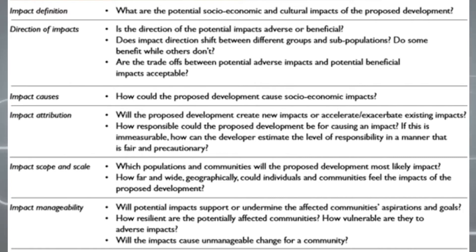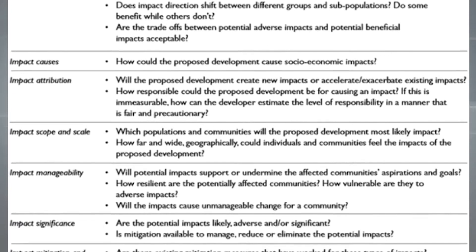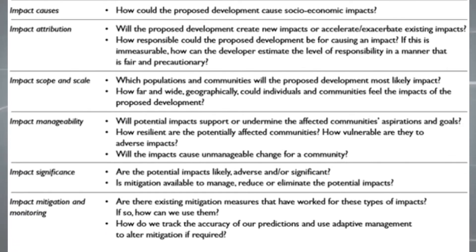Impact scope and scale — which populations and communities will most likely be impacted, and how far and wide geographically could individuals and communities feel the impacts? Impact manageability — will the impacts support or undermine the affected communities' aspirations and goals? Will the impacts cause unmanageable change for a community? How resilient are the potentially affected communities, and how vulnerable are they to adverse impacts? Impact significance — are the potential impacts likely adverse or significant? Is mitigation available to manage, reduce or eliminate the potential impacts? Impact mitigation and monitoring — are there existing mitigation measures that have worked for these types of impacts, and how can we track the accuracy of our predictions and use adaptive management to alter mitigation if required?